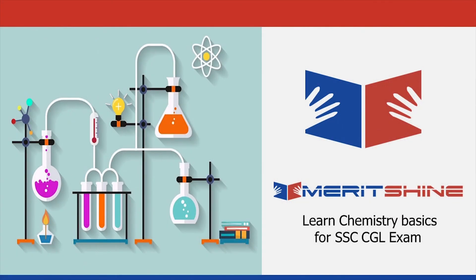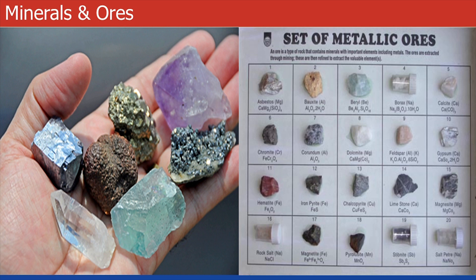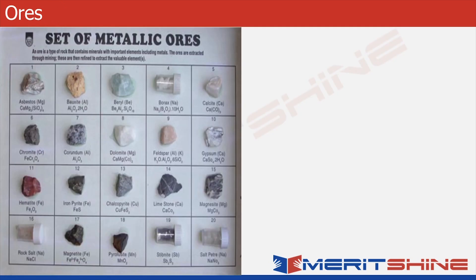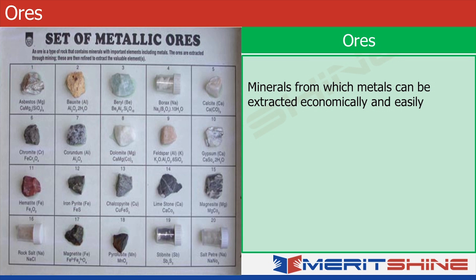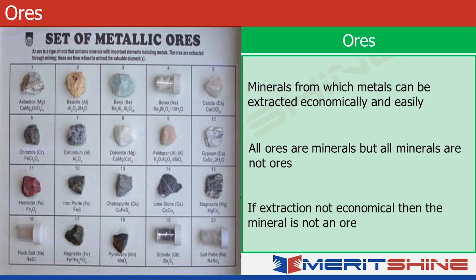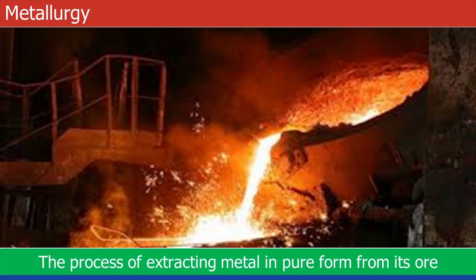In this video we will learn about minerals and ores. The compound of a metal found in nature is called a mineral. A mineral may be a single compound or may exist in a more complex form. Those minerals from which metals can be economically and easily extracted are called ores. An important point to note is the word 'economically' — all ores are minerals, but all minerals are not ores, because we cannot extract metals from all minerals economically.